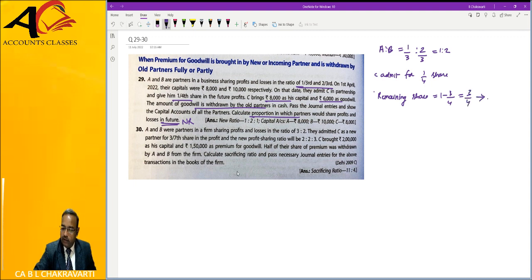And we will share this by A and B in old ratio. So what is the new share? What will A's new share be? 3 by 4, 2/3, then 2 by 4. C has a new share of 1/4.